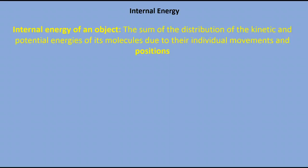Now we're going to look at what we mean by internal energy. The definition, and it's a wordy one, is that the internal energy of an object is the sum of the distribution of the kinetic and potential energies of its molecules due to their individual movements and positions. Basically, it is just the sum of all of the energies of all of the molecules inside an object or a system, but you do need to learn this full, wordy definition.